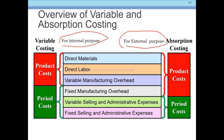Under variable costing, when determining product costs, only direct material, direct labor, and variable manufacturing overhead are included. Fixed manufacturing costs are not included in product cost under the variable cost concept. Variable selling and administrative expenses and fixed selling and administrative expenses are treated as period costs, not product costs.